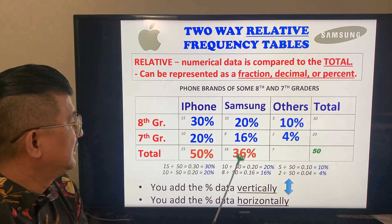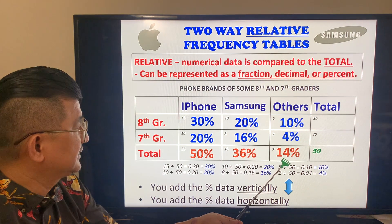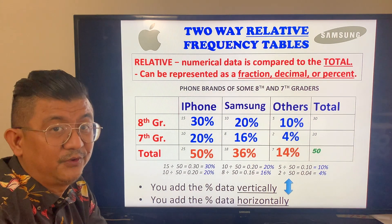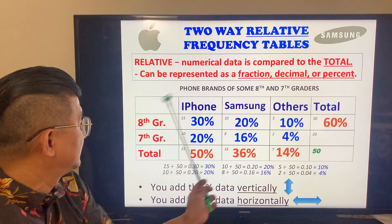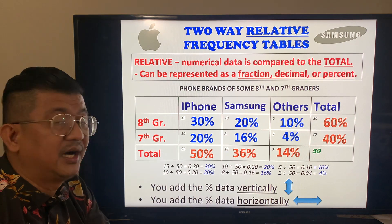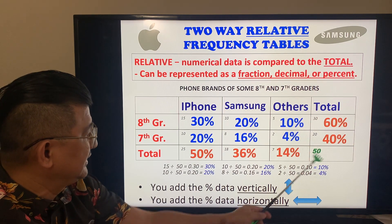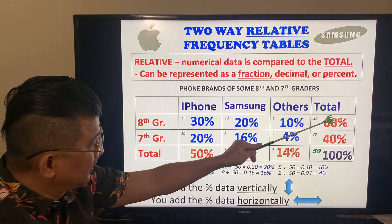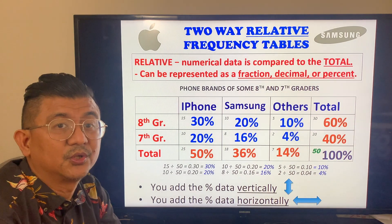I could say 50% of the students have an iPhone, 36% of the students have Samsung, and 14% of the students have other branded phones. In terms of grade level, 60% of the students are 8th graders and 40% are 7th graders. If you add those two, that's 100%. If you add the three phone brands, that's 100%. So we know we're right — the total vertically is 100 and the total horizontally is also 100.